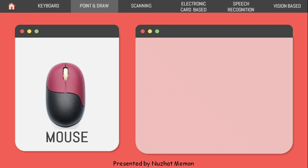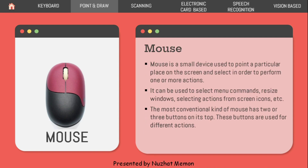Next is the point and draw category, which has two devices. First is the mouse. Mouse is a small device used to point to a particular place on the screen and select items to perform one or more actions. It can be used to select menu commands, resize windows, and select actions from screen icons. The most conventional mouse has two or three buttons on top used for different actions — typically two buttons and one scroll wheel.